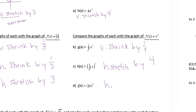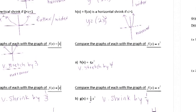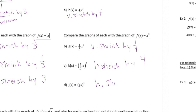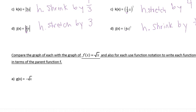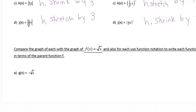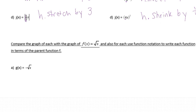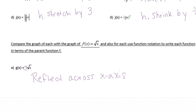The four is inside again, so we know it's horizontal, but it is bigger than one, so that's a horizontal shrink. You have to flip it anytime you do horizontal. Now let's do the square root function. Compare the graph of each to the parent function y equals square root of x. This one has a negative, so that's going to be a reflection — reflect across the x-axis. In function notation, we write g of x equals negative f of x.